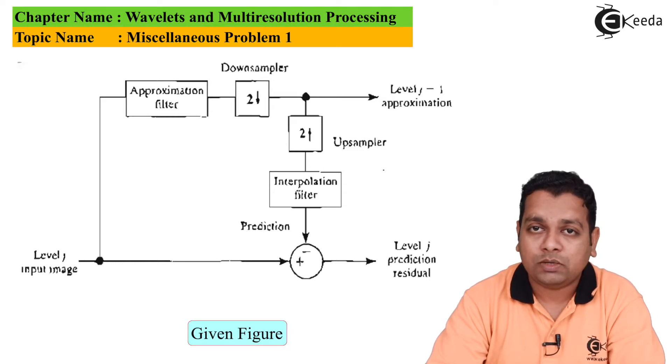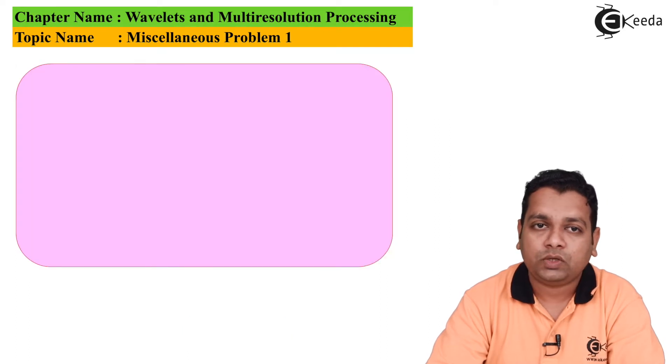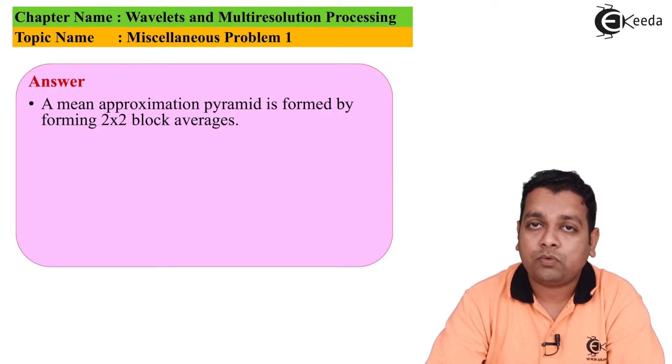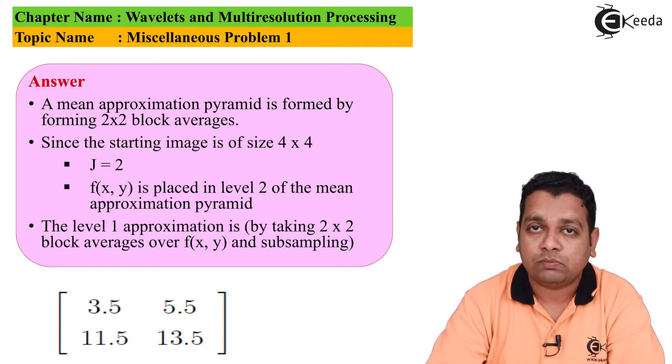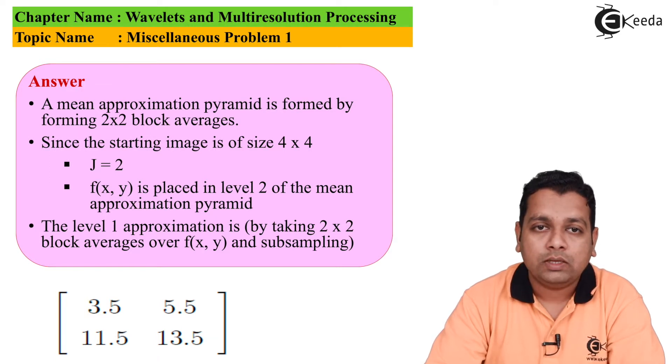Let us answer the question. A mean approximation pyramid is formed by forming 2 by 2 block averages. As mentioned in the problem statement, the neighborhood should be 2 by 2. Since the starting image has 4 rows and 4 columns, we can write dimensions 4 by 4. Because of that, we select J = 2, and f(x,y), the input image, is placed into level 2 of the mean approximation pyramid.